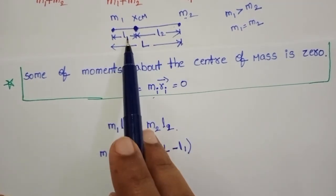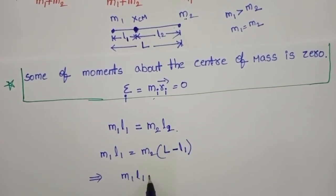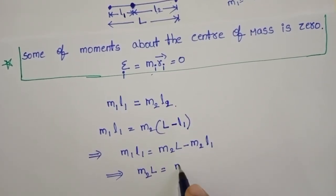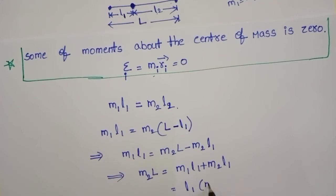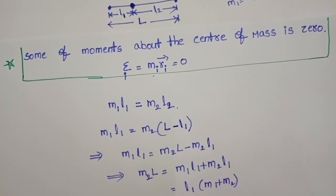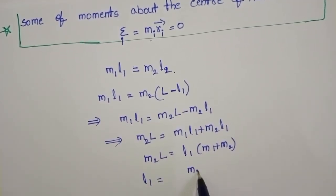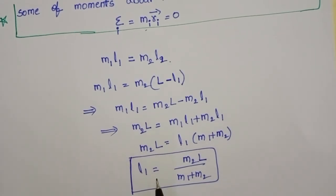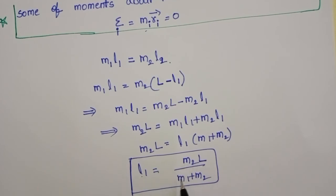So L2 = L minus L1. From this, M1·L1 = M2·(L - L1), which gives M2·L = M1·L1 + M2·L1. Taking L1 common, M2·L = L1·(M1 + M2). Therefore, the position of center of mass from M1 is L1 = M2·L divided by (M1 + M2).